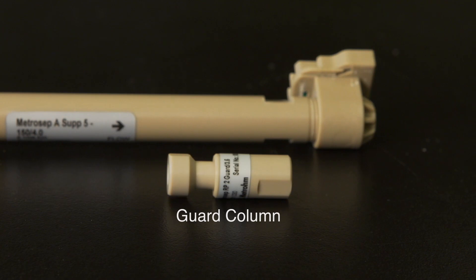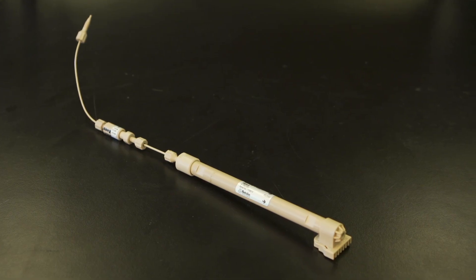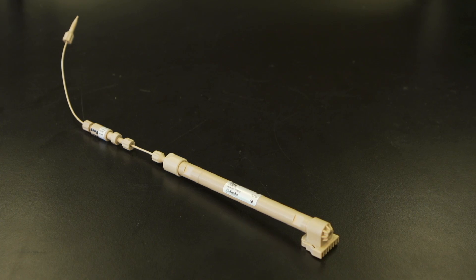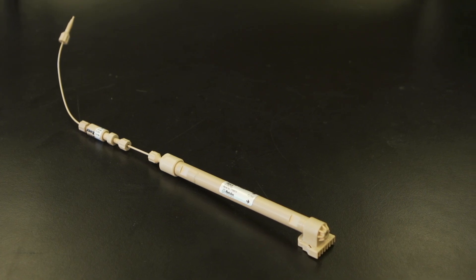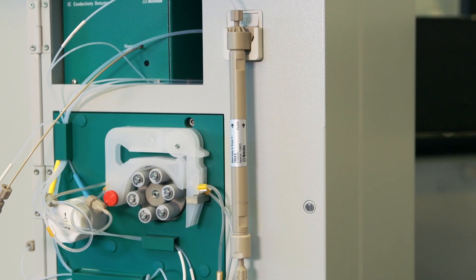Often, a guard column is placed before the analytical column. The guard is a short section of column similar in composition to the analytical column. It filters out particulates and strongly binding contaminants that may never release from the column material. This allows the much more expensive analytical column to have a longer life.